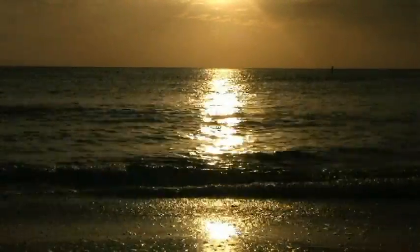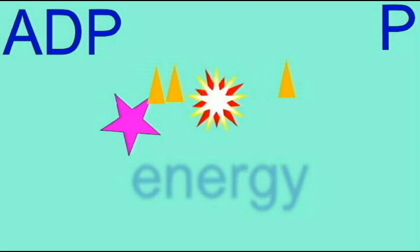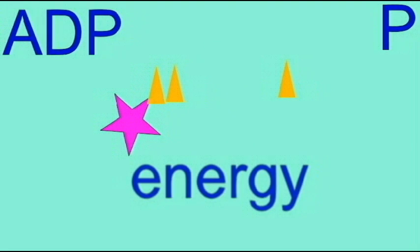UV light can cause the formation of adenosine from adenine and ribose, and it can cause the formation of ADP and ATP from a solution of adenosine and ethyl metaphosphate.